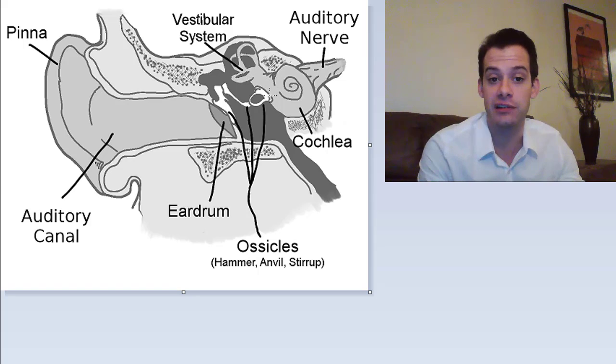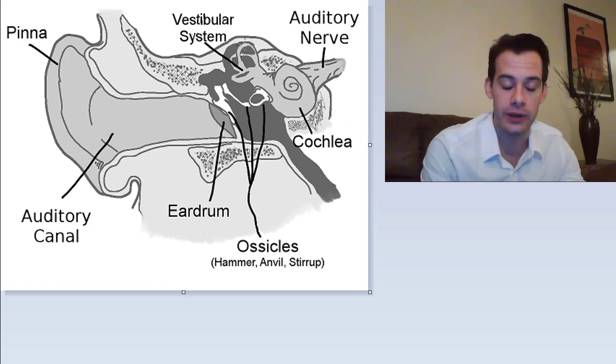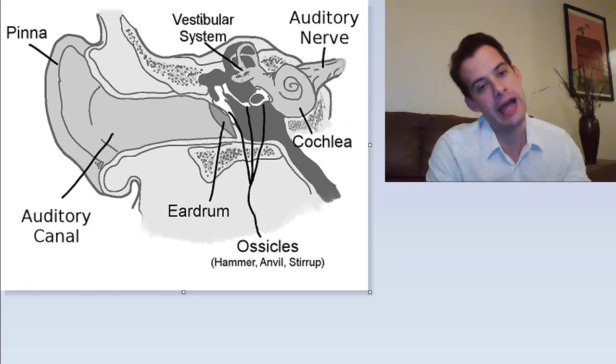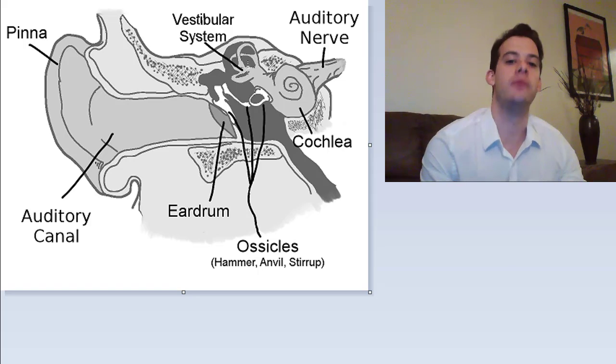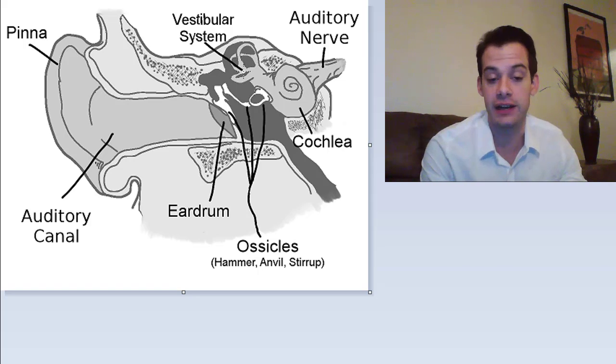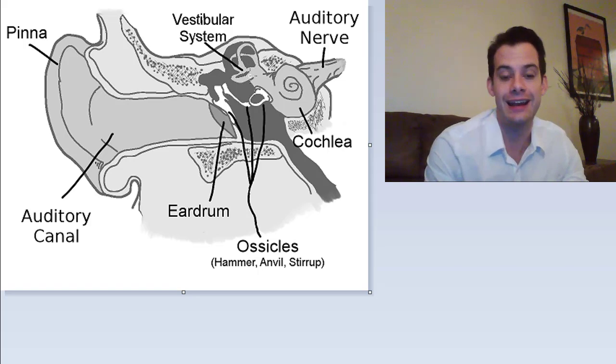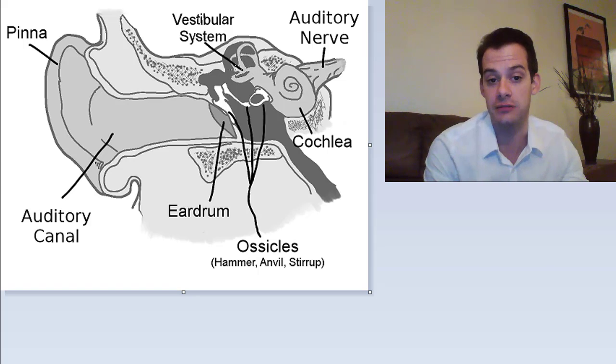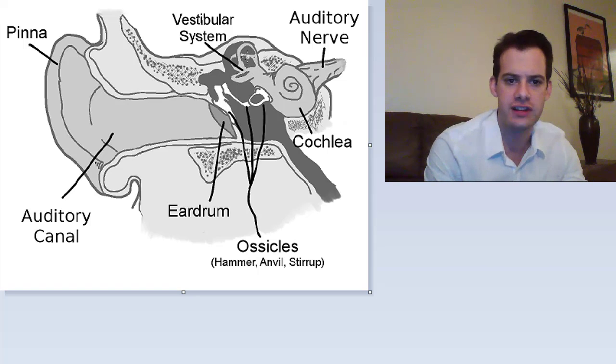Then we have these three semicircular canals pointed in different directions, at 90-degree angles to one another. These are also filled with fluid, so when you move your head, the fluid moves in different directions throughout these canals. That triggers hair cells and tells you which way your head is moving. It's a bit hard to see the orientation.